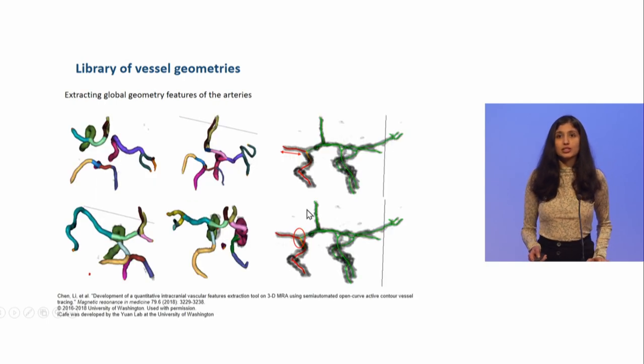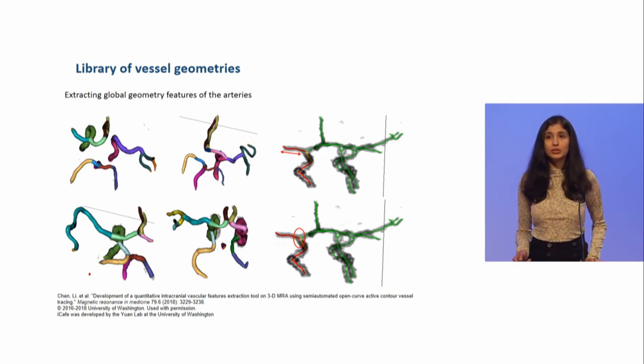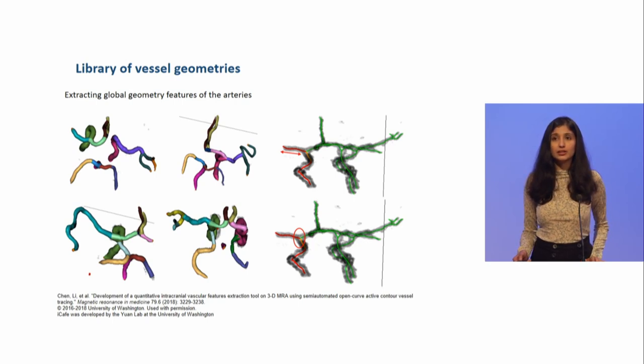We post-processed them, and using software developed by University of Washington, we extracted the global geometry features of these arteries and also labeled each of the arteries. As you can see here, each color represents a segment of the artery in the intracranial anterior circulation, and from these segments we can extract the tortuosity, length, and the angle between each of the arterial segments.